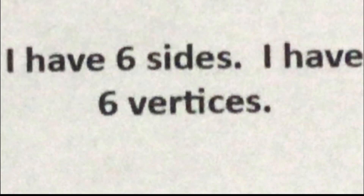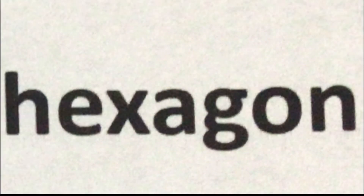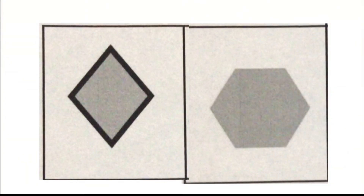I have six sides. I have six vertices. Your options are a rhombus or a hexagon. The answer is a hexagon, because the rhombus has four sides and the hexagon has six sides.